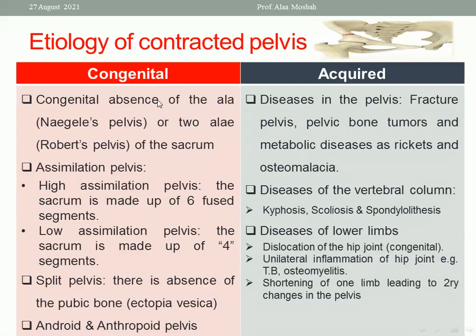Acquired causes include diseases in the pelvis such as fractured pelvis, pelvic bone tumors, and metabolic diseases like rickets and osteomalacia. Diseases of the vertebral column include scoliosis, kyphosis, and spondylolysis. Diseases of the lower limbs include dislocation of the hip joint, fracture of the femoral neck, and unilateral inflammation of the hip joint, for example osteomyelitis or tuberculosis. Shortening of one limb leads to secondary changes in the pelvis due to limping, making the pelvis oblique in shape.